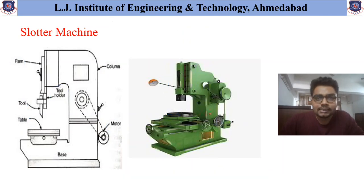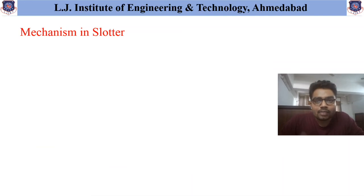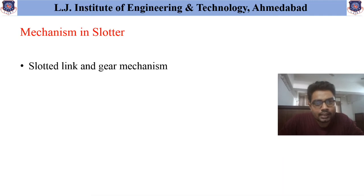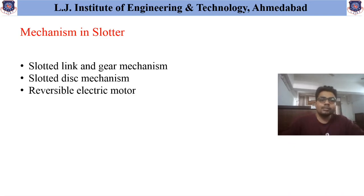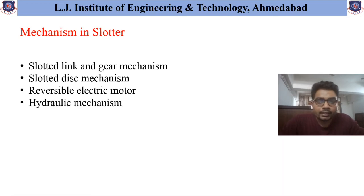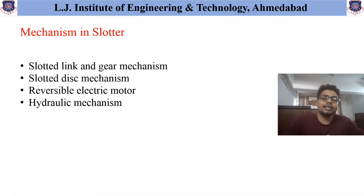Let us discuss the mechanisms available in the slaughter machine. The first mechanism is the slotted link and gear mechanism. Another one is the slotted disk mechanism. The next, mostly used in many machines, is the reversible electric motor. And the widely used mechanism in industries nowadays is the hydraulic mechanism, which is fluid operated.